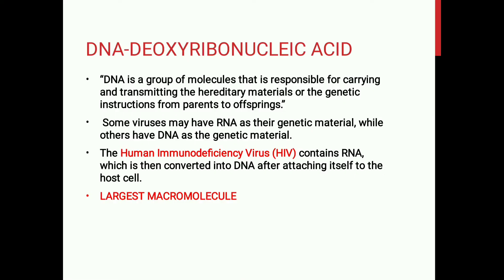सबसे पहले देखते हैं कि DNA क्या है। जो DNA है, जिसे हम deoxyribonucleic acid भी कहते हैं — that is because of the type of sugar present in it। अगर आपने nucleic acids वाली वीडियो देखी होगी तो उसमें यह clear किया गया है कि इसे deoxyribonucleic acid क्यों कहते हैं, that is because of the deoxyribose sugar present in it। क्योंकि जो nucleic acid है उसके तीन components होते हैं — phosphate, pentose sugar, और nitrogen base। जो pentose sugar DNA में होता है, it is the deoxyribose sugar। इसलिए जो नाम है वो है deoxyribonucleic acid।